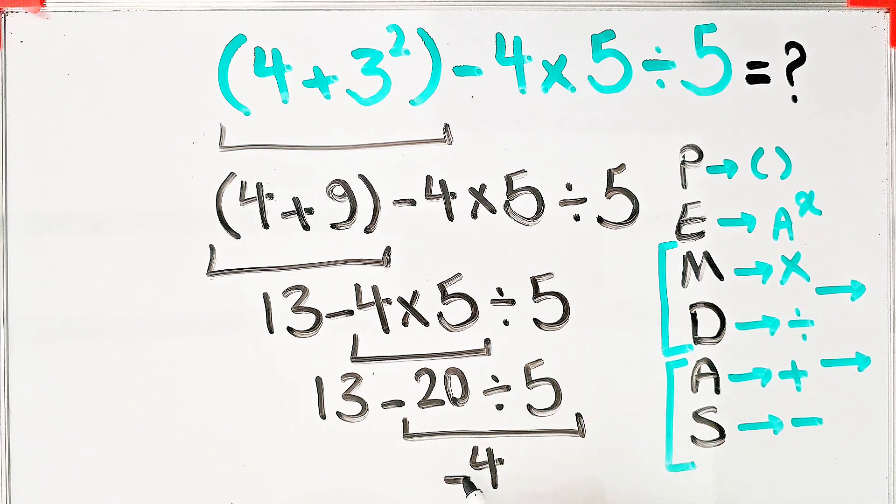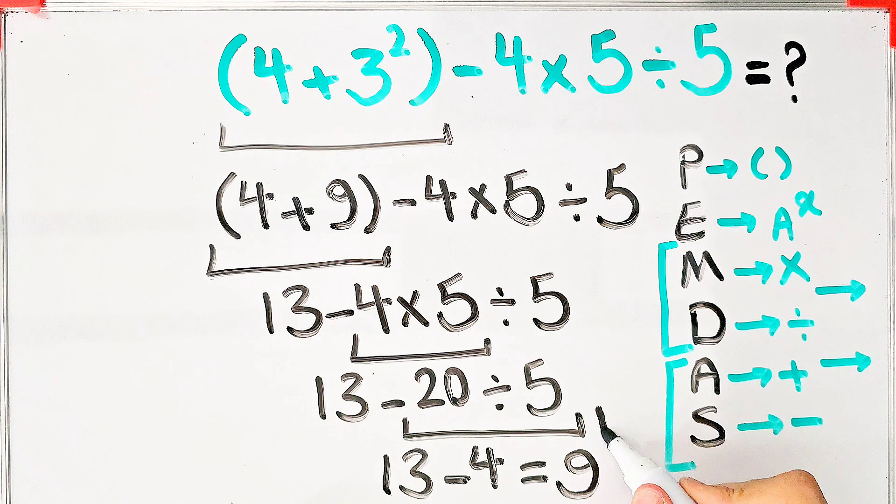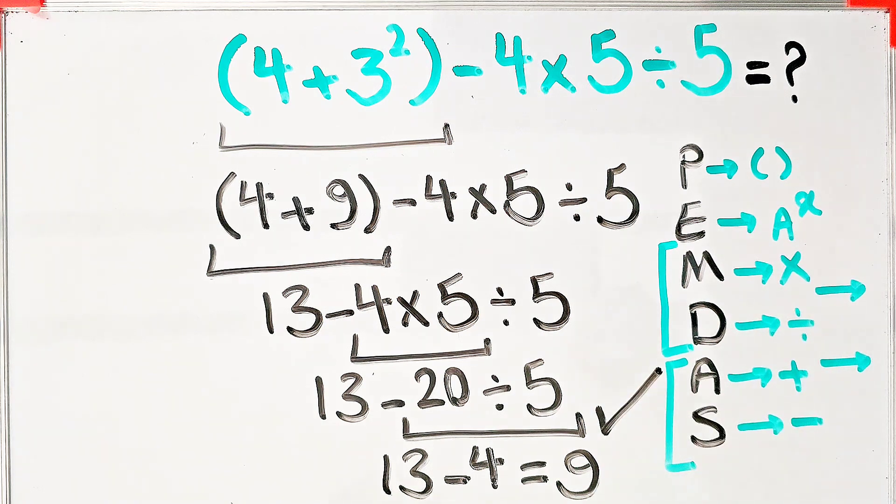And we have 13 minus 4. 13 minus 4 equals 9, and the final answer of this question equals 9. Thanks for watching, guys. To see more math videos, subscribe to the channel. Goodbye.